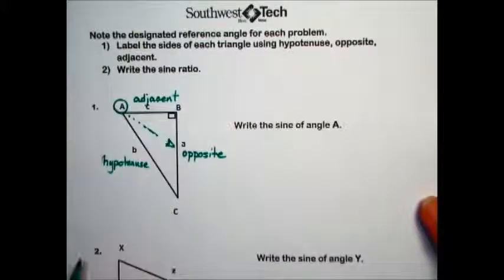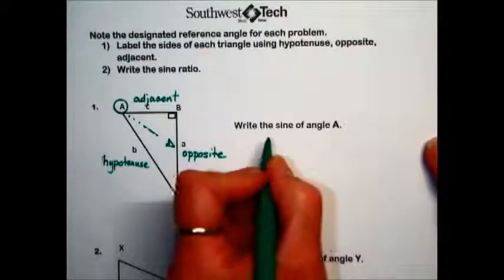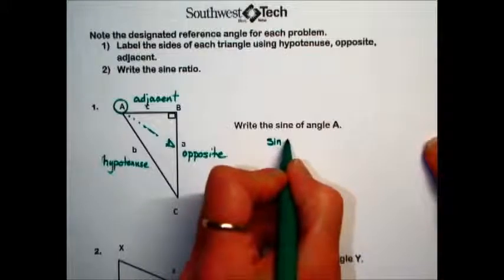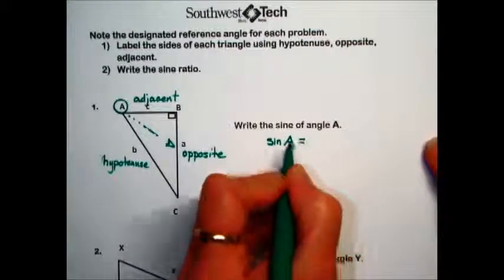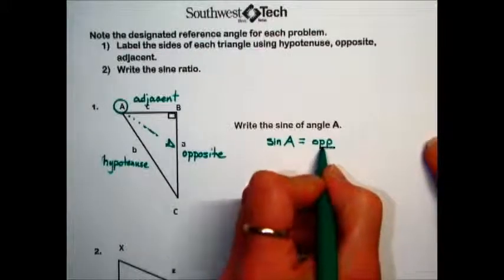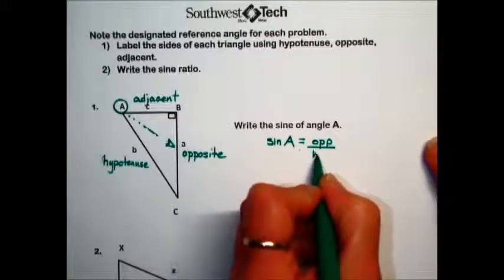They're asking us to write the sine of angle A. Well, that is the ratio. The sine of that angle is the ratio of the opposite side over the hypotenuse.